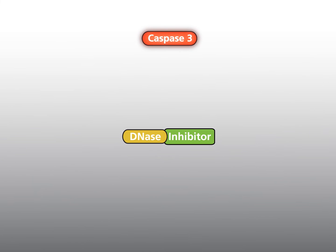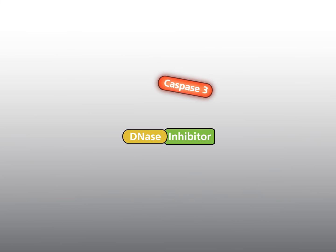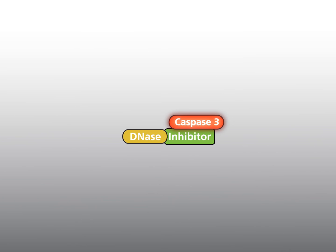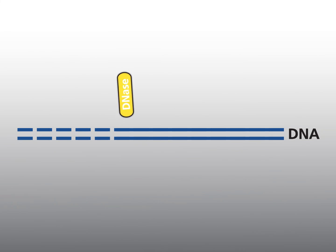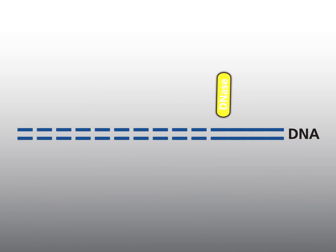Execution - Cleavage of DNA: Important steps of the execution phase are the cleavage of DNA and the cleavage of the cytoskeleton. In the normal cell, DNase is complexed to an inhibitor and is inactive. After initiation and activation of the caspase cascade, active Caspase 3 is able to cleave this inhibitor. Activated DNase cleaves DNA. Cleavage sites are located at regular intervals of 180 base pairs. In between, histone proteins of nucleosomes protect the DNA against DNase cleavage.